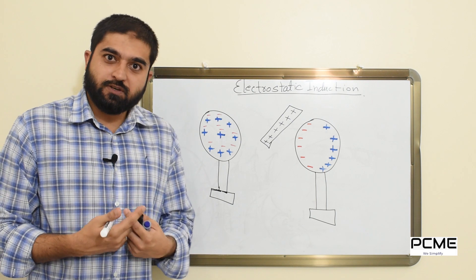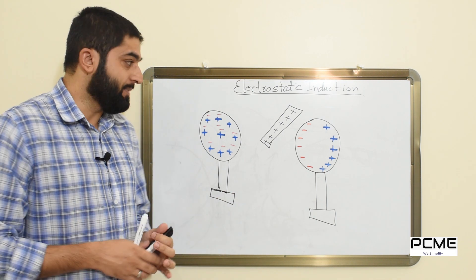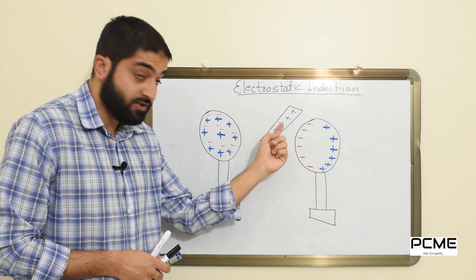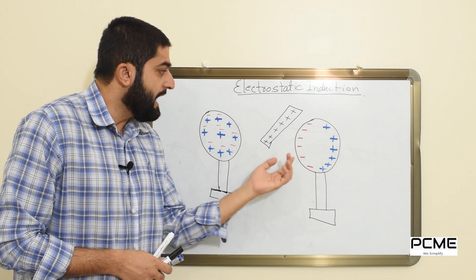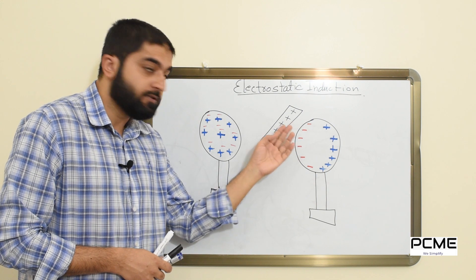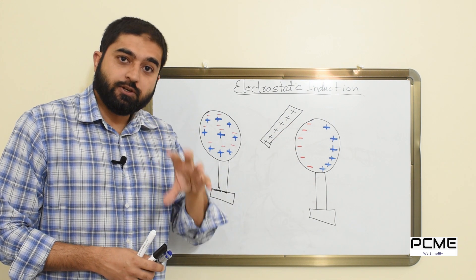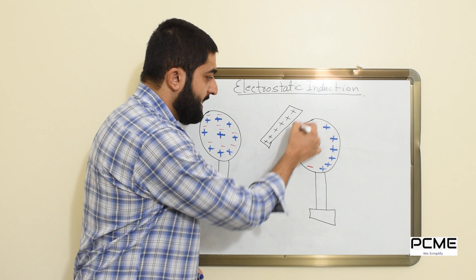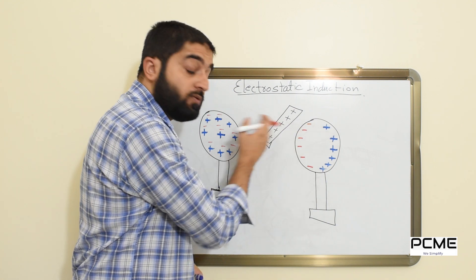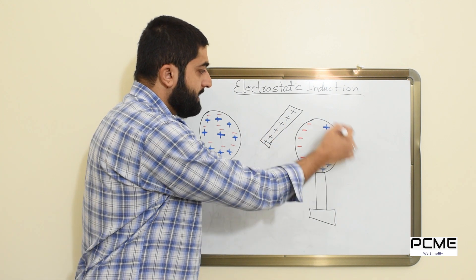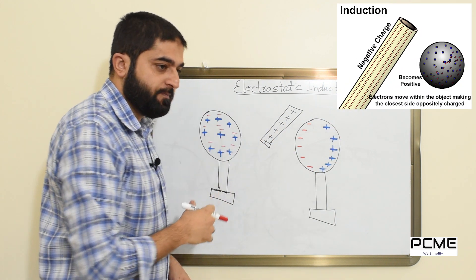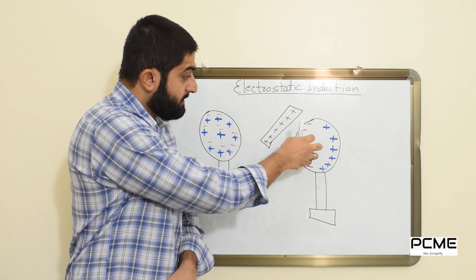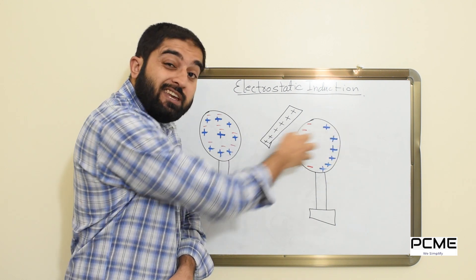When you bring a positively charged rod close to the sphere, all of the free electrons in the sphere will be attracted due to the force of attraction of the positive charge on the rod, and they will move closer to the positively charged rod. Due to this movement of electrons, you will have a higher concentration of negative charge on the side close to the positive charge, while the other side will have a higher concentration of positive charge. This process is called electrostatic induction, where the charged object influences the charges in the neutral object to rearrange themselves.